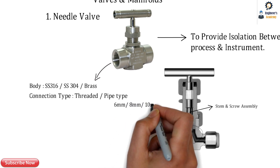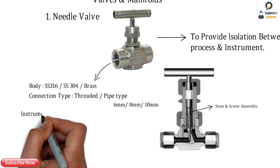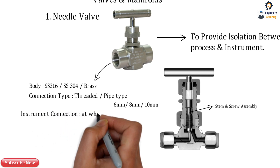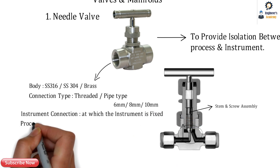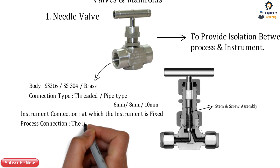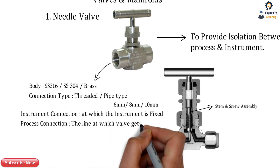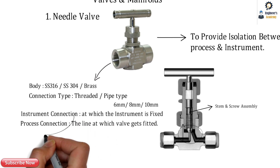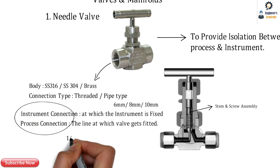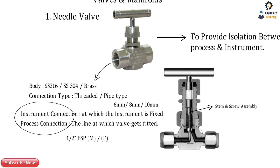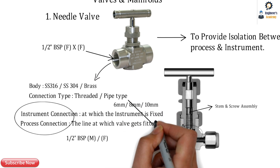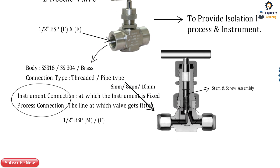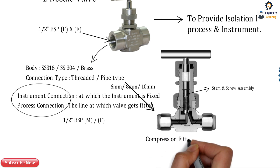The connection type can be threaded process connection or pipe type — 6 mm, 8 mm, or 10 mm pipe — which is essentially a compression fitting. The instrument connection is the side where the instrument gets fixed on the needle valve, and the process connection is the side mounted on the process. These connections can be half inch BSP, NPT, or other thread types. The sectional view also shows the compression fitting type, also known as a compression fitting needle valve.